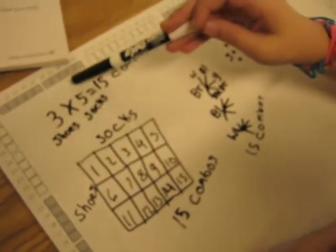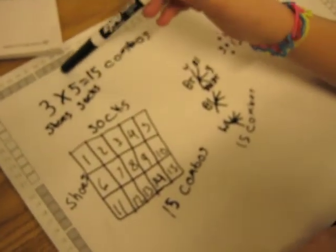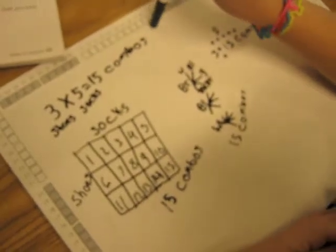So what I did here was I did three times five because there's three shoes and there's five socks, and I got fifteen combinations.